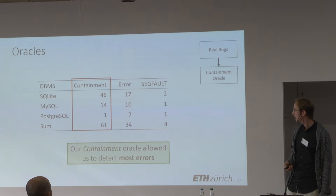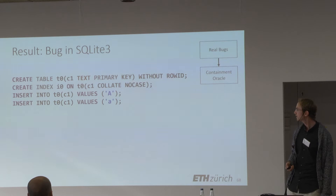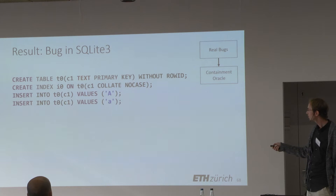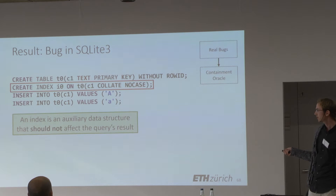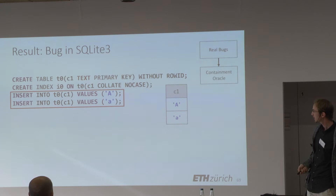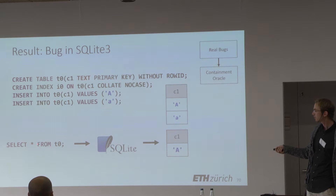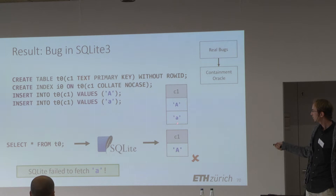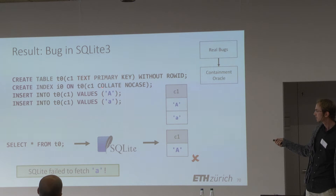Most bugs were found with the containment oracle. Here is one SQLite example: we create a table, create an index — an auxiliary data structure that should never affect query results but only speed them up — then insert two values, uppercase A and lowercase a. When we select all records, SQLite unexpectedly only fetches a single row, failing to fetch the lowercase a because it mistakenly used the index in a case-sensitive context, when the COLLATE NOCASE postfix should only apply where casing is irrelevant. This was a serious bug that had existed in SQLite for years and was quickly fixed.